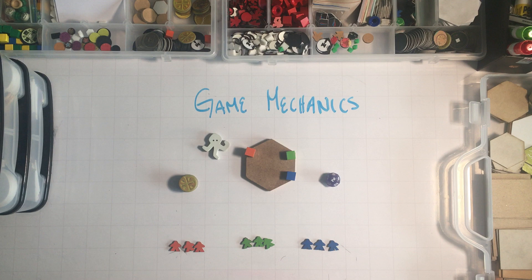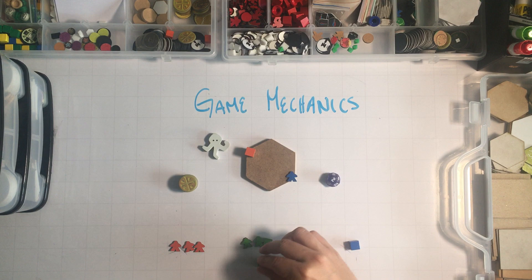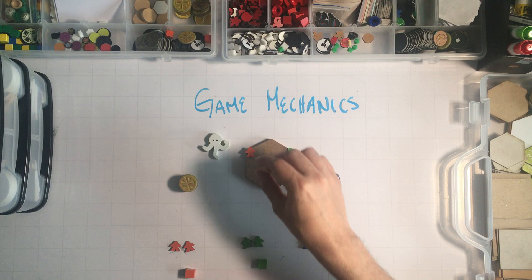Whenever I place a token, what will happen is in a resolution phase I will be able to place one of my meeples. These in board games are called meeples if you are not a board game player. One of my meeples in each of the vertices where I placed my placement token.